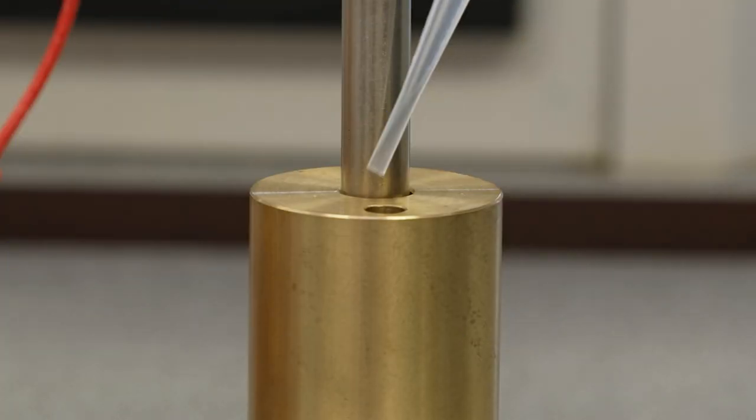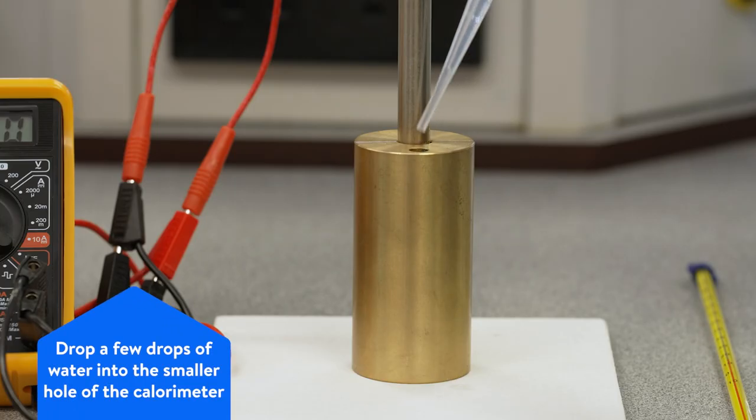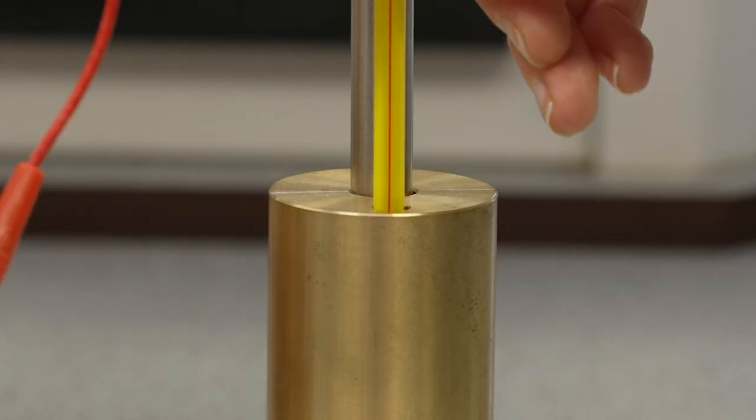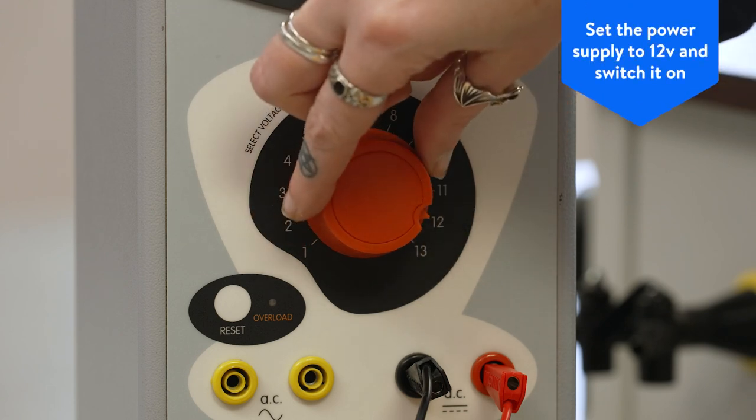Using a small 3 milliliter dropping pipette, drop a couple of drops of water into the smaller hole of the calorimeter. This will help the thermal contact between the calorimeter and the thermometer. Set the power supply to 12 volts and switch on.